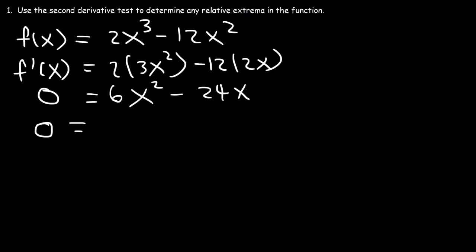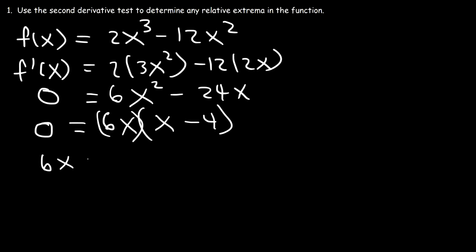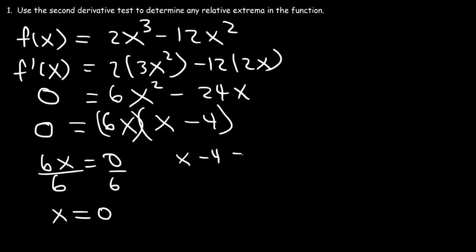Let's factor out the GCF, which is 6x. So 6x² ÷ 6x = x, and -24x ÷ 6x = -4. Setting each factor equal to 0: if 6x = 0, then x = 0. If x - 4 = 0, then x = 4. So the critical numbers are x = 0 and x = 4.